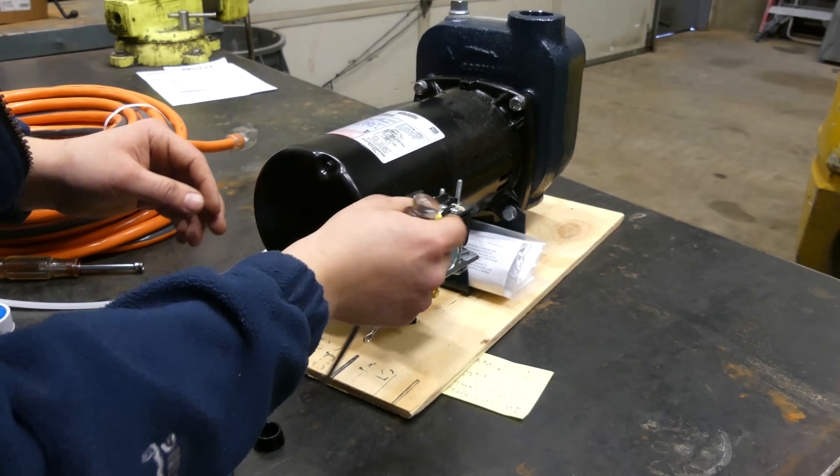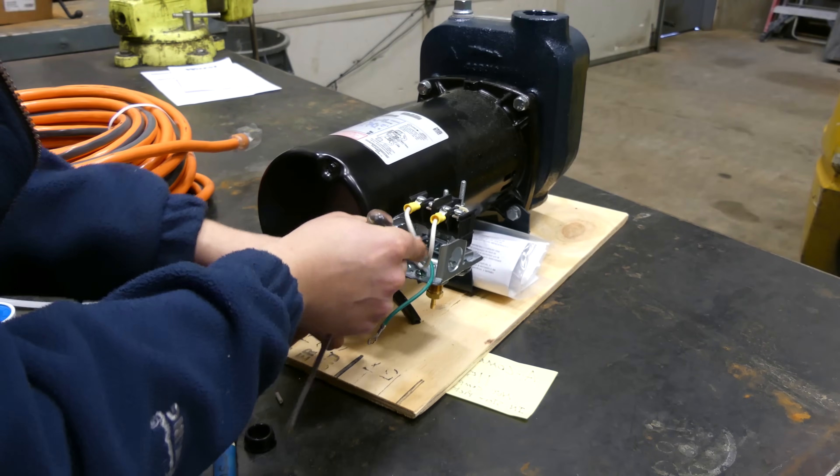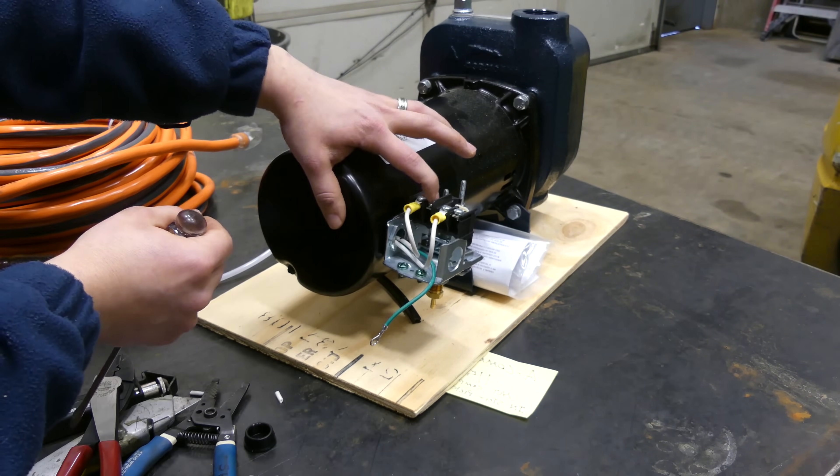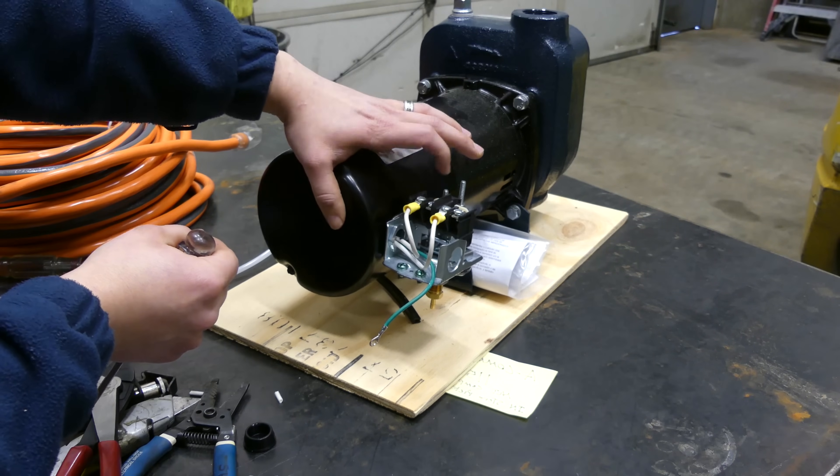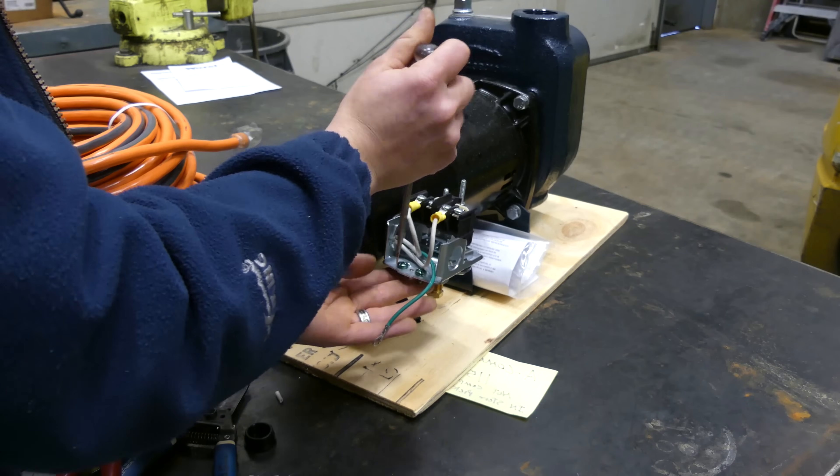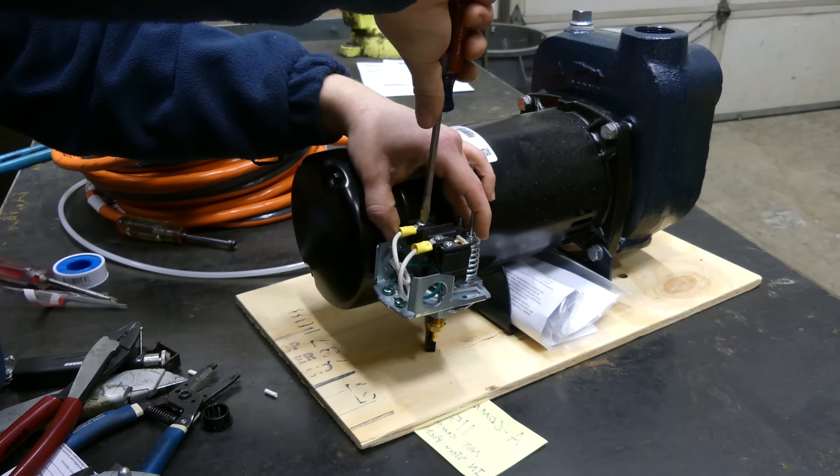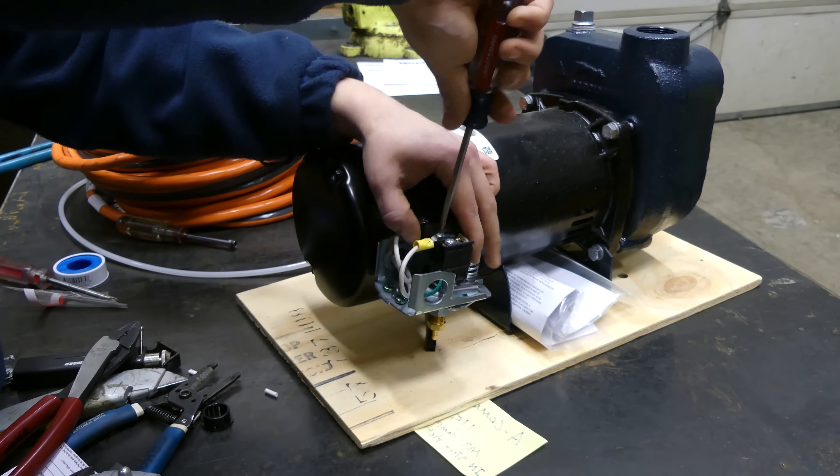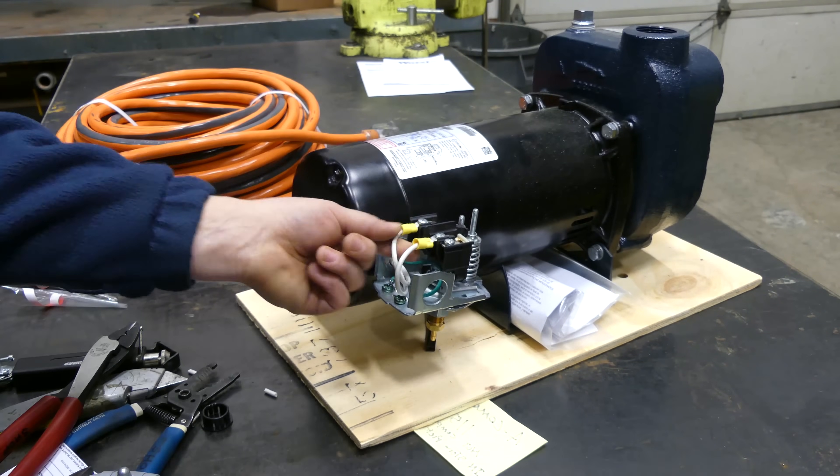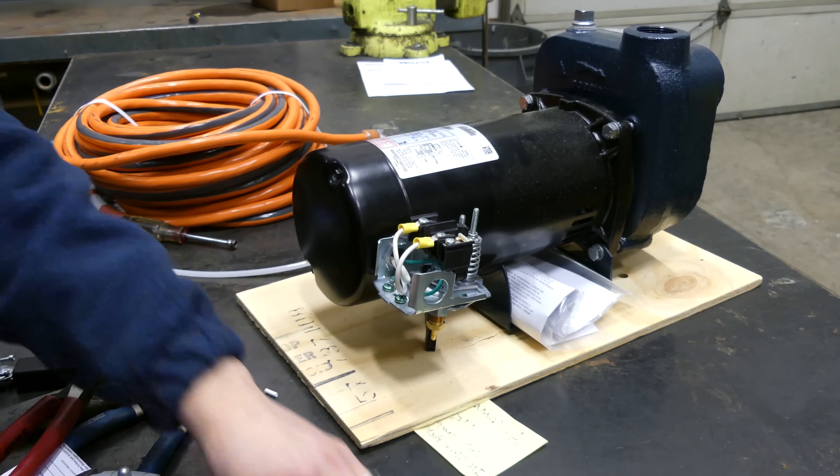So now we can just hook these up to our pressure switch. And we know that this here is our L1 because I marked it. So we're going to make sure that we put our L1 or our hot on the extension cord right here and then the neutral over here. And we're also going to have to hook up these grounds. And you want to make sure this is as tight as you can get it with your hand when you're working on pressure switches because the better connection, the better it's going to be.